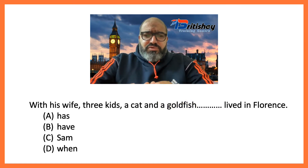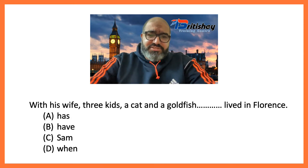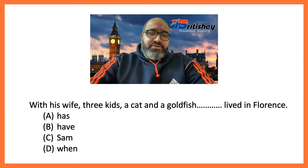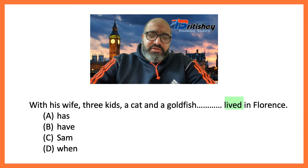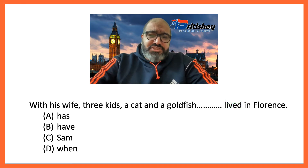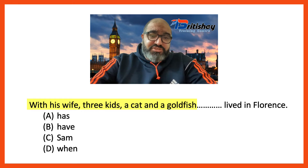There is a rule of thumb: objects of prepositions can never be subjects. This means we're looking for a subject in this sentence, because 'lived' is the verb and we're missing a subject. Someone might say we've got 'his wife, three kids, a cat and a goldfish,' but those are all objects of the preposition 'with.'